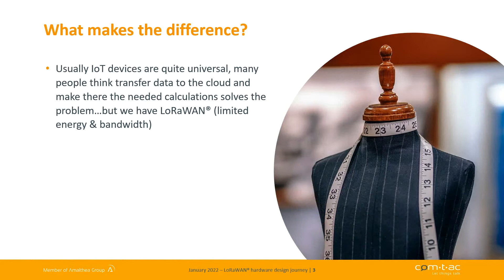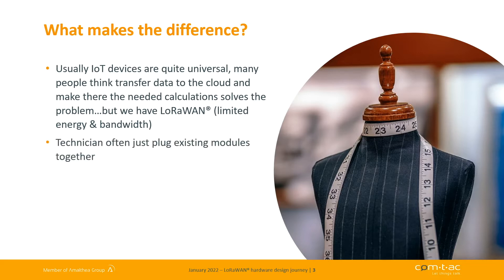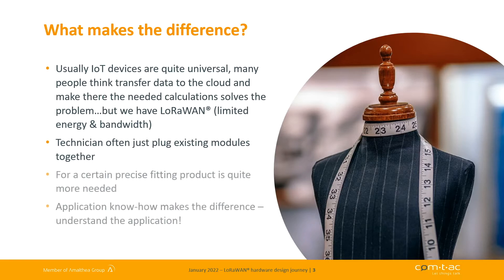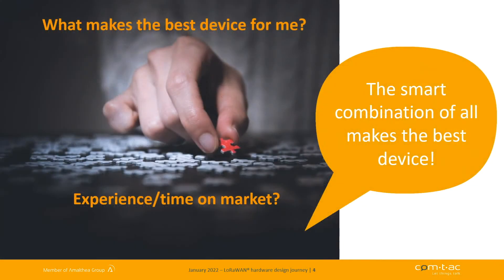Especially for LoRaWAN, we have some limitations: limited energy and really reduced bandwidth. You need to have application-level edge computing in the device itself. That means you can't use a truly dumb device — you need some intelligence at the device itself to get the most out of it. To do that it's really important to understand your application and specially optimize how the device works for certain applications.